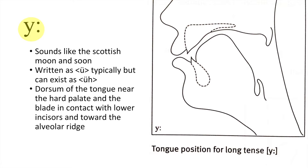Our next sound is the long ü. This sound is similar to that found in English words 'moon' and 'soon'. You can make this sound by having the dorsum of the tongue near the hard palate with the blade of the tongue in contact with the lower incisors and towards the alveolar ridge.